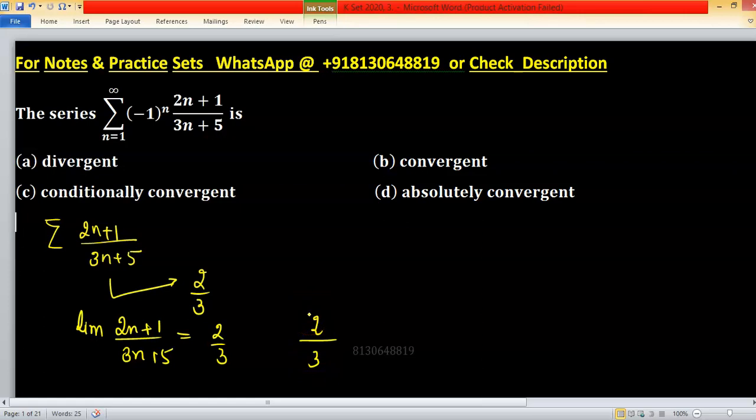Or you can understand coefficient of higher exponent, sorry coefficient of higher degree variable. So you can consider n is variable, its coefficient is 2 and in denominator coefficient is 3. So 2 upon 3.